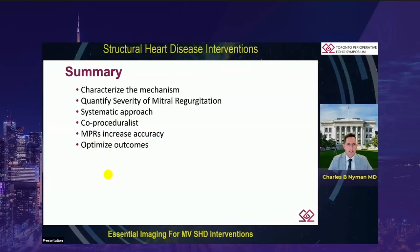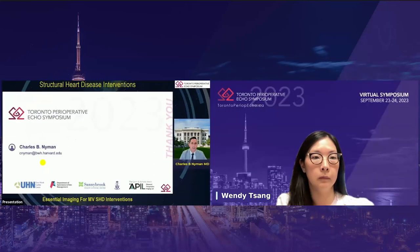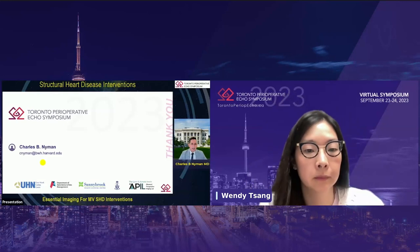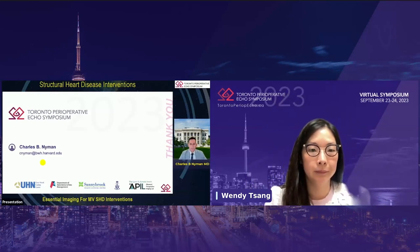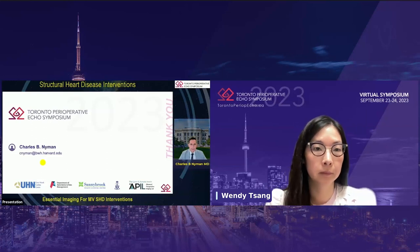In summary: start by characterizing your mechanism of MR, actually quantify the severity — my personal preference beyond the guidelines is to focus on the vena contracta area. Have a systematic stepwise approach as the co-proceduralist. Definitely use your real-time MPRs to not only increase your accuracy, but to guide the procedure and help avoid pitfalls and complications. Embrace your role as the co-proceduralist to really strive to optimize the outcomes. Thank you for this opportunity, and if you have any questions, feel free to email me directly, or I look forward to answering them in the Q&A session to follow.